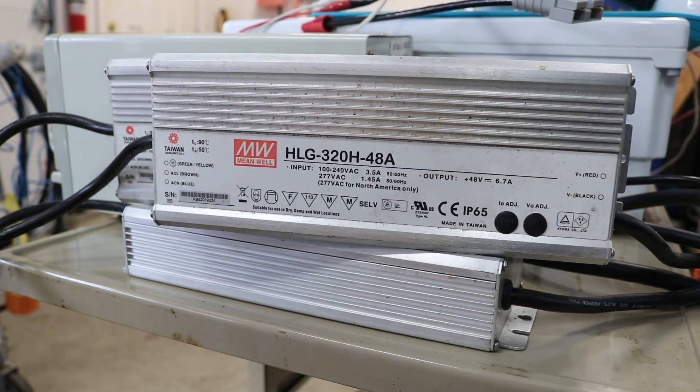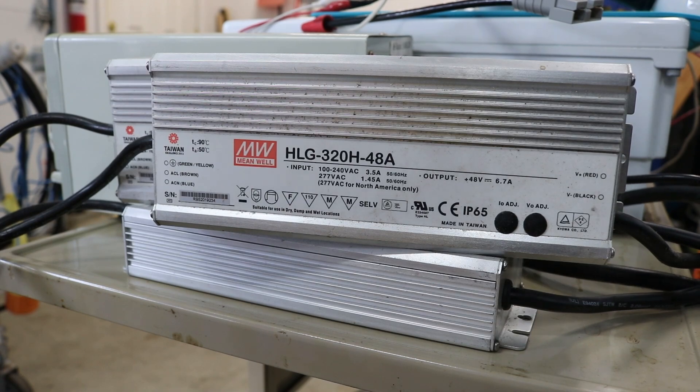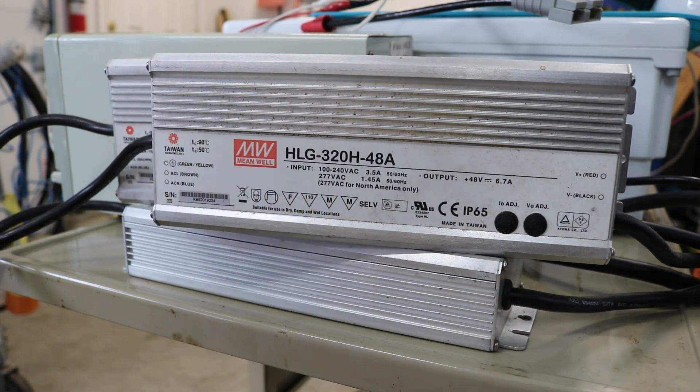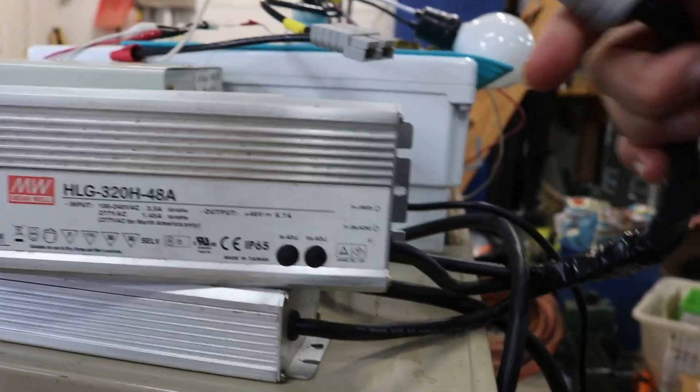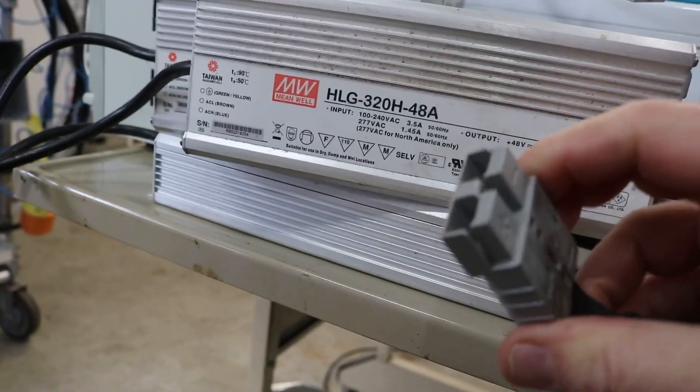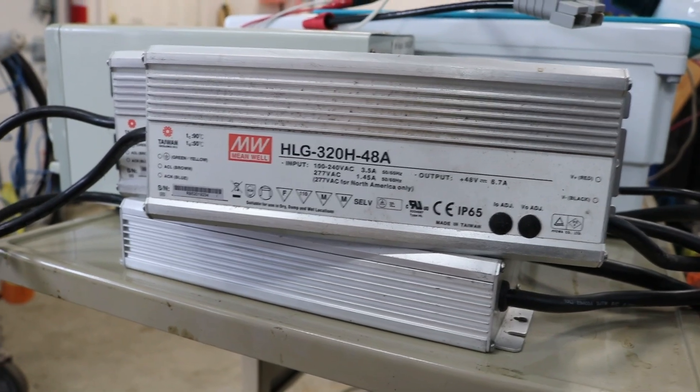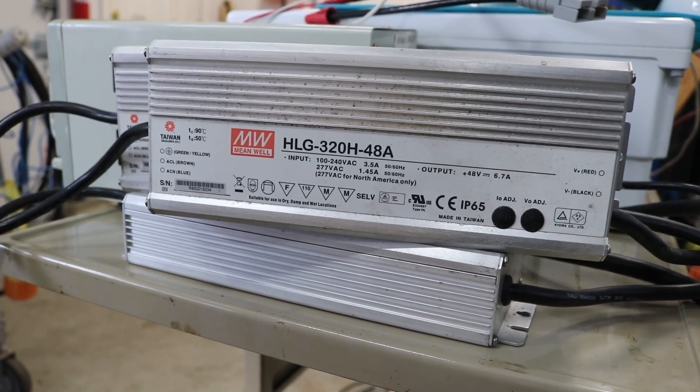Over here is the power input end. I just have those all connected together, so they all just go to one regular Edison wall plug here. And then on the output end they're all connected together going to just a single Anderson quick disconnect right here.